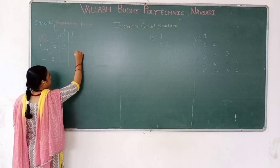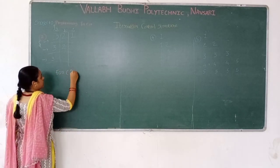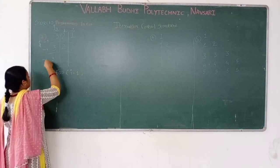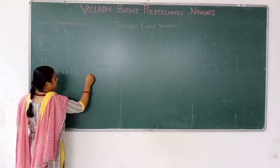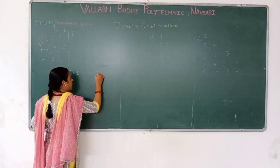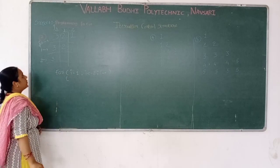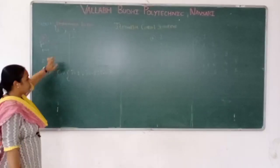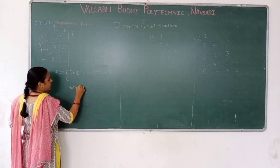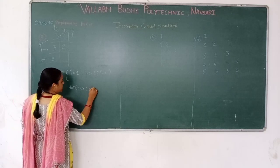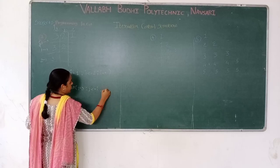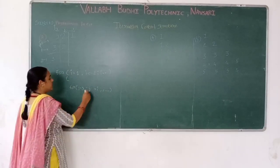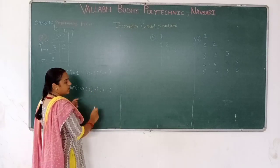First of all, take our first row. For i: i is equal to 1, and i goes up to 3, i plus plus. The value of j starts from 3. So I will write j is equal to 3, j is greater or equal to i, then j minus minus.